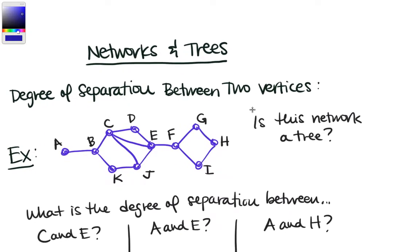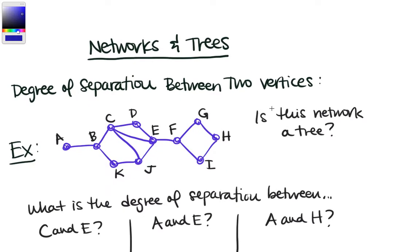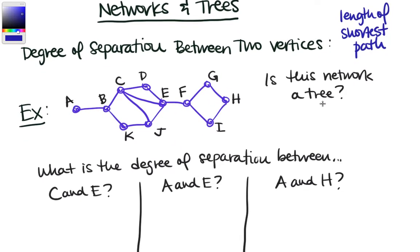The degree of separation between two vertices is the length of the shortest path between those two vertices. Let's use this definition on our first example. We've got a graph and we first want to know: is this network a tree? It's connected, so it's a network, but we can see immediately there are several circuits — a square, a triangle, and a hexagon — so the answer is no, because there are circuits.